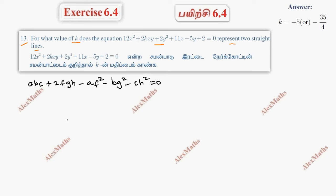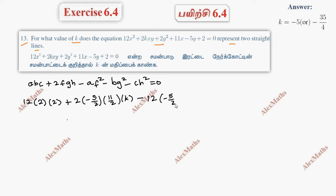In the condition, substitute all values. A value is 12, B value is 2, C value is 2. Plus 2 times: F value is minus 5 by 2, G value is 11 by 2, H value is K. Minus AF squared, F value minus 5 by 2. Minus BG squared, so 11 by 2, whole square. Minus CH squared, so minus 2 times H which is K.